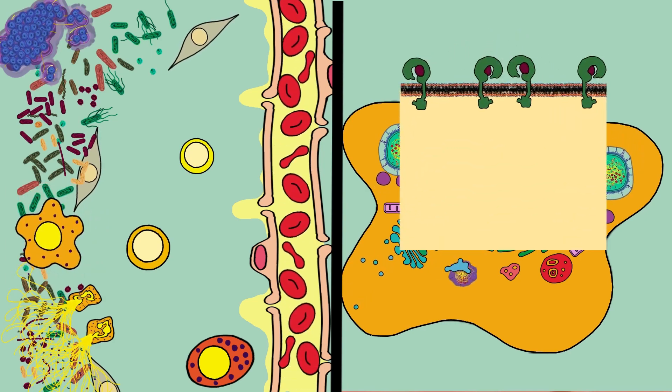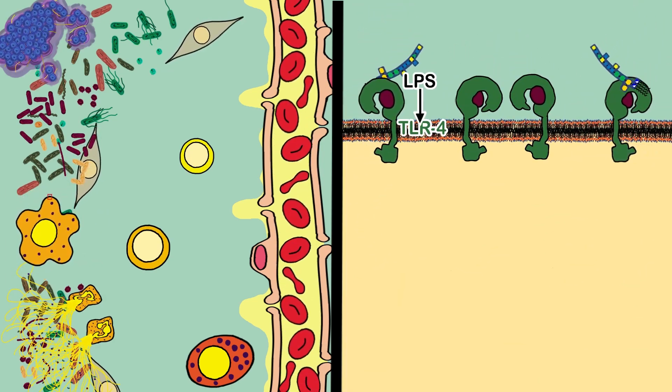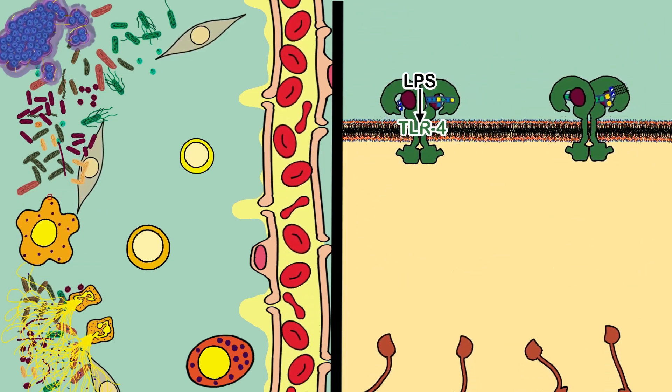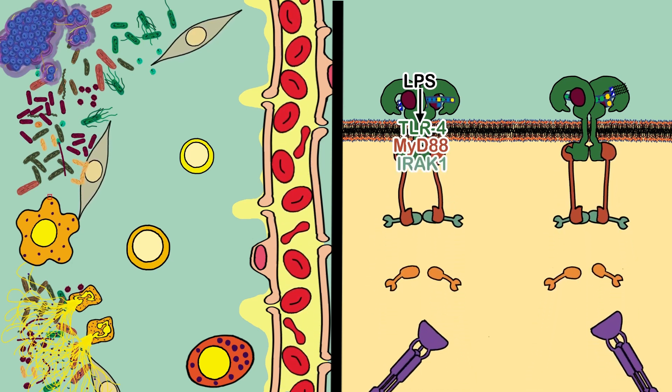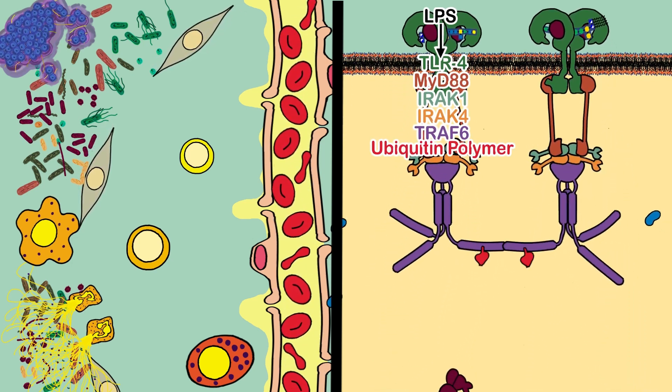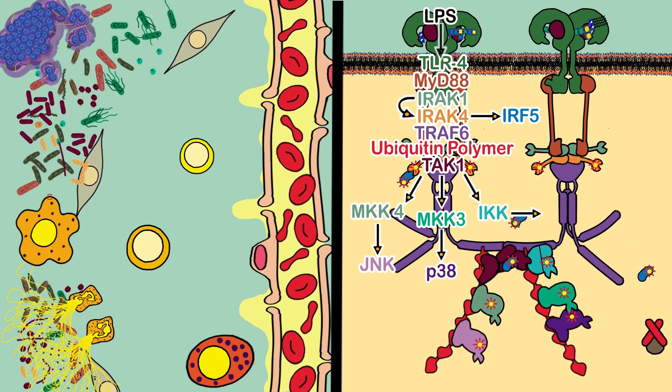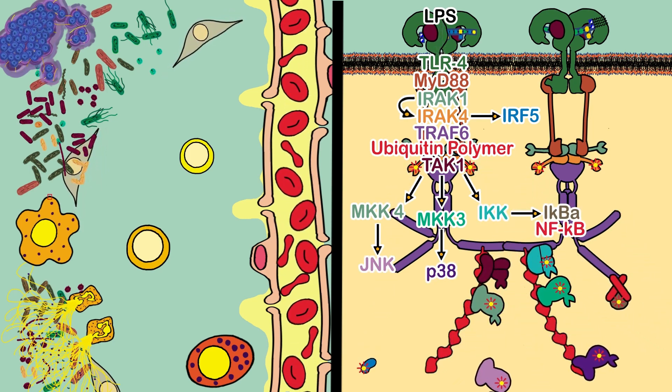Proteins in the macrophage's membrane called toll-like receptors bind with bacterial lipoproteins and dimerize to form a protein complex that initiates signaling pathways that activate regulators that induce the expression of cytokines and chemokines proteins.